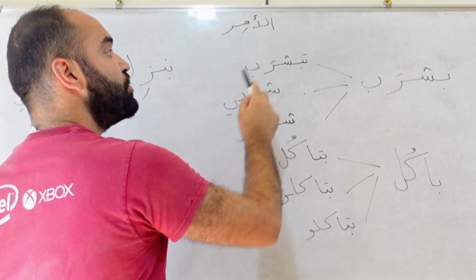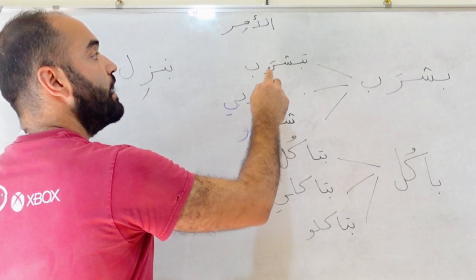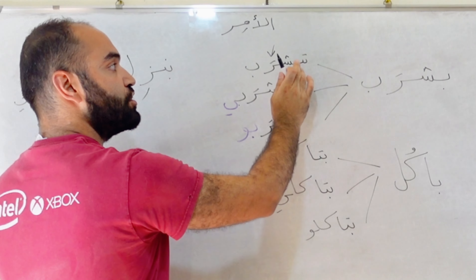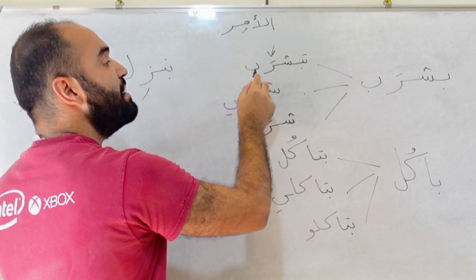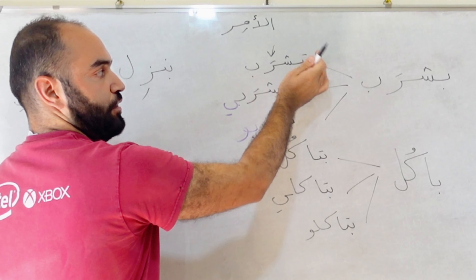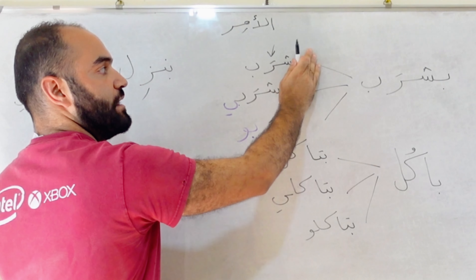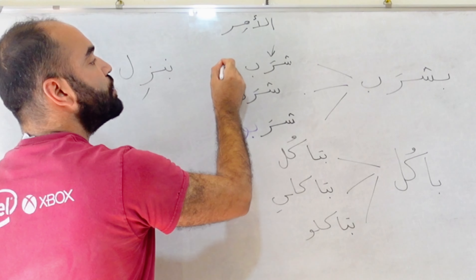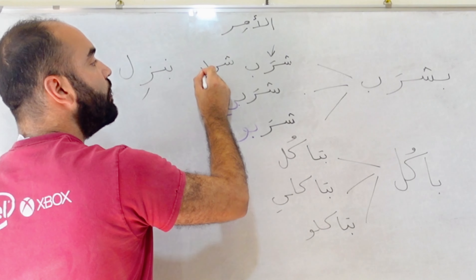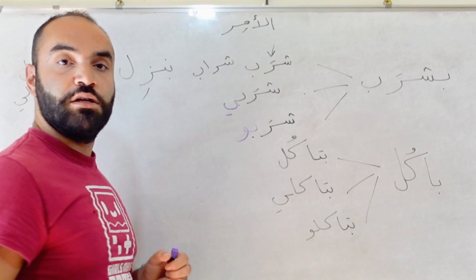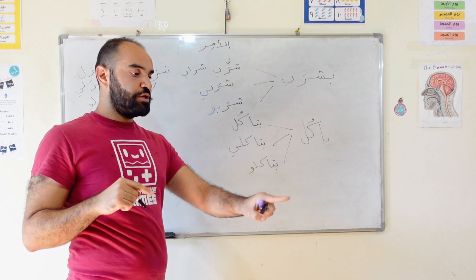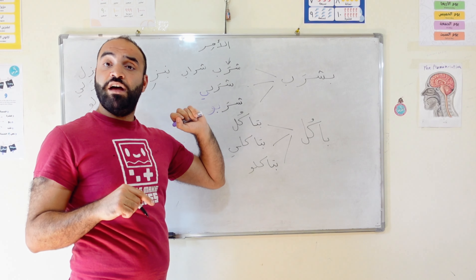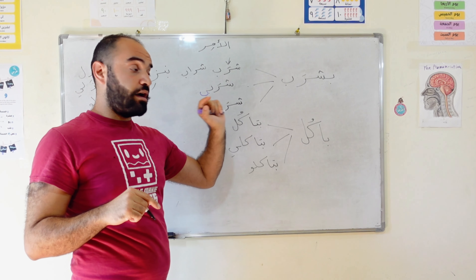Now, tishrub — if there is a fatha, tishrub becomes alef. And of course you delete the prefix: اشرب (ishrab), اشربي (ishrabee), اشربو (ishrabu). So this is an example with a verb that has fatha.